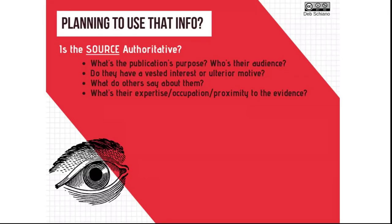When deciding whether to use a source of information, the authority of the author is significant because it helps contextualize whether what we're saying adds value to the discussion. These questions can help you make that decision. Ask yourself: Is the source authoritative? What's the publication's purpose? Who's their audience? Do they have a vested interest or ulterior motive? What do others say about them? What's their expertise, occupation, or proximity to the evidence?